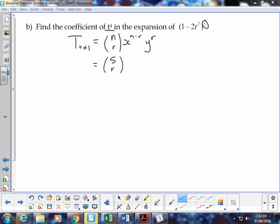First term is 1, so 1 to the power 5 minus r. Second term, be careful, is negative 2t squared, negative 2t squared to the power r.